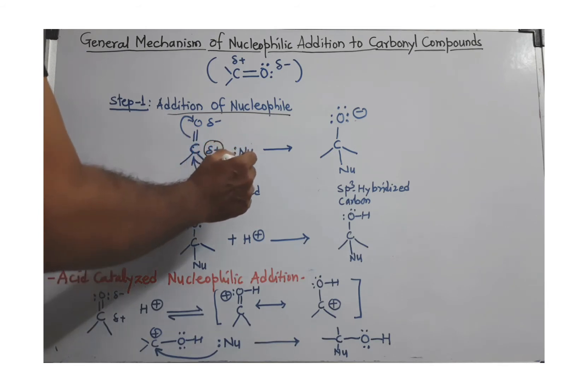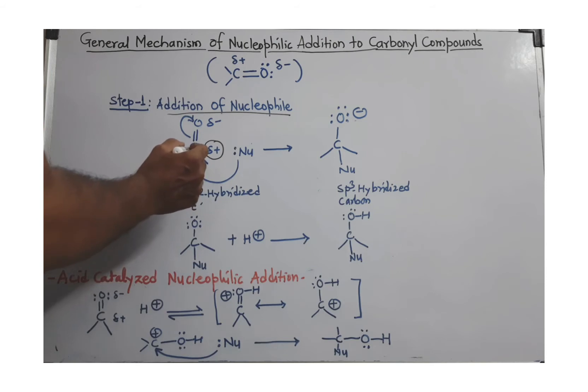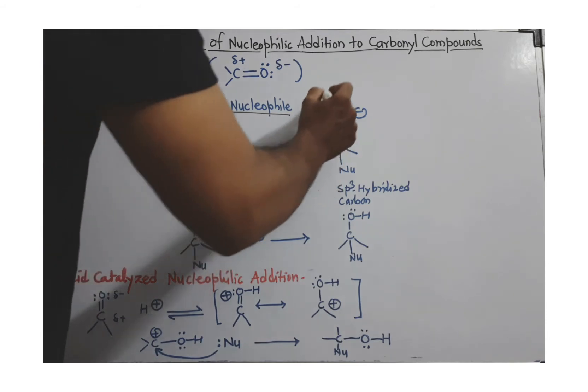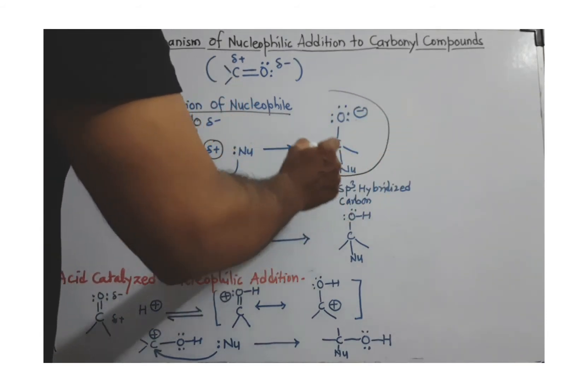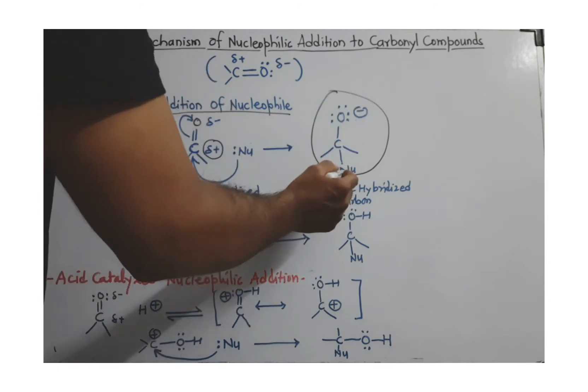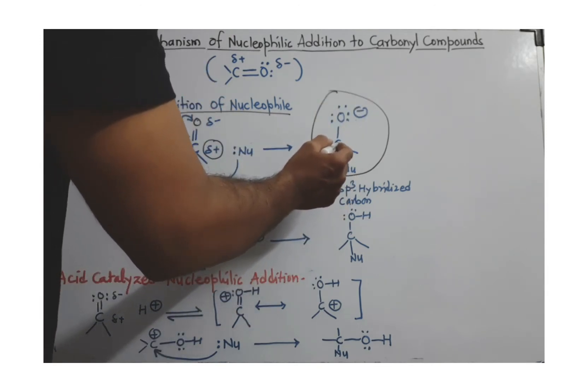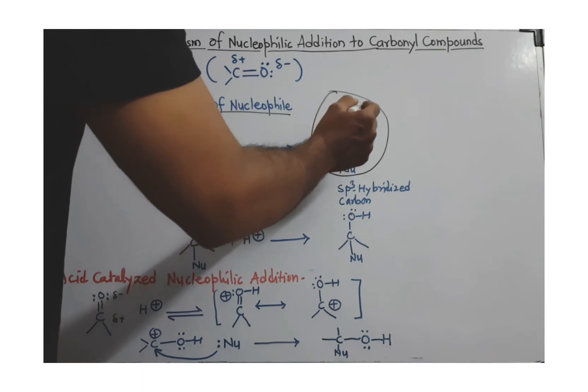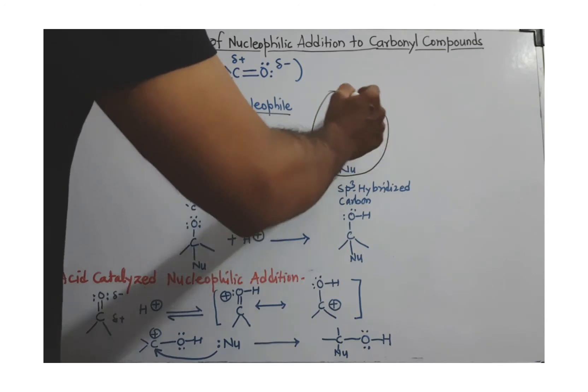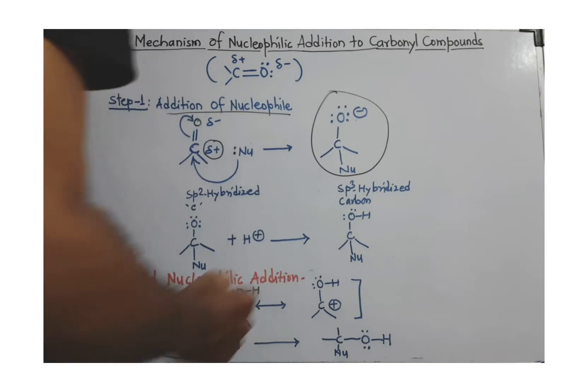The nucleophile provides a pair of electrons to the carbonyl carbon to form a bond, and this pi bond shifts over oxygen. We get this intermediate product where the nucleophile is joined to the carbonyl carbon and oxygen has three lone pairs, so a complete negative charge develops over oxygen.